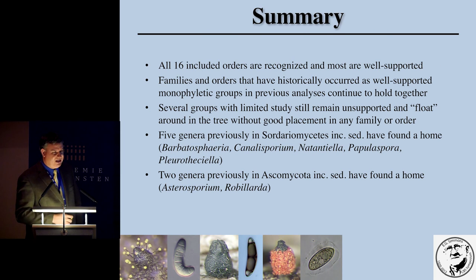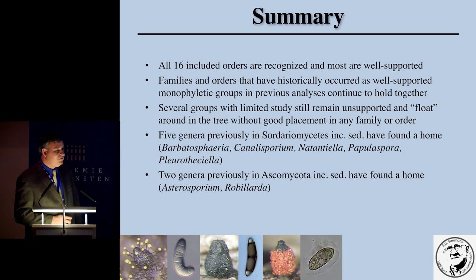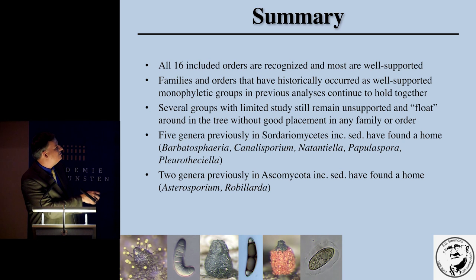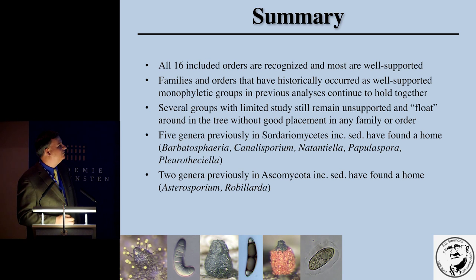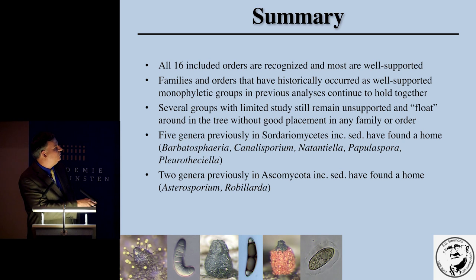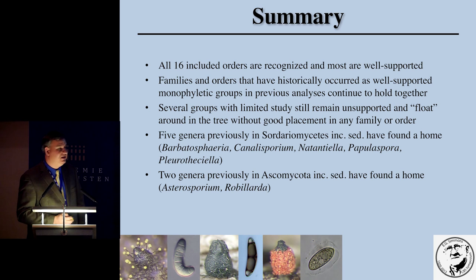To summarize: all 16 included orders are recognized and most are well-supported. Families and orders that have historically occurred as well-supported monophyletic groups in previous analyses over the last 10 years continue to hold together. Several groups with limited study still remain unsupported even with more taxa and data added. Notably, five genera previously placed as Sordariomycetes incertae sedis have found a home in monophyletic groups, and two genera placed in Ascomycota incertae sedis have now found a home in the class Sordariomycetes.